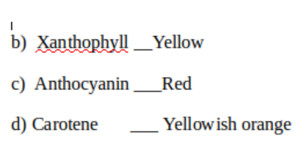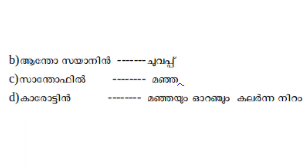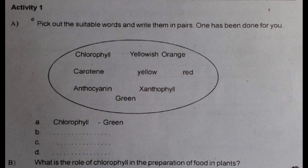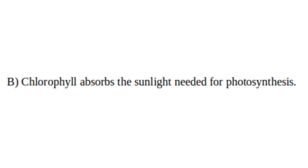Carotene gives the color orange. What is the role of chlorophyll in the preparation of food in plants? Chlorophyll absorbs sunlight.